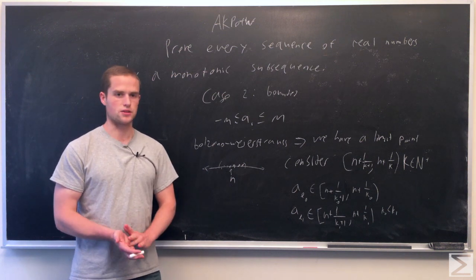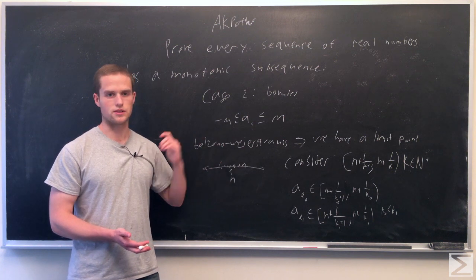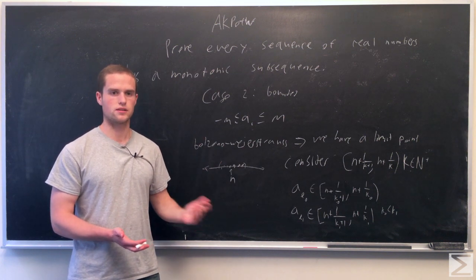So this establishes that, in fact, if it's unbounded, we must have a sequence. If it's bounded, we also must have a monotonic subsequence.